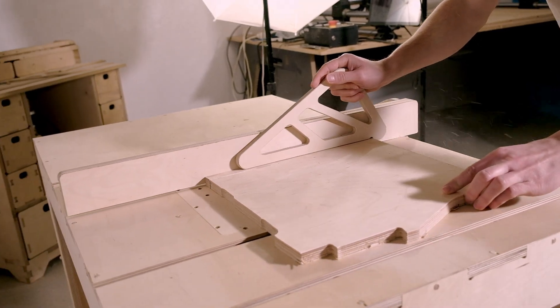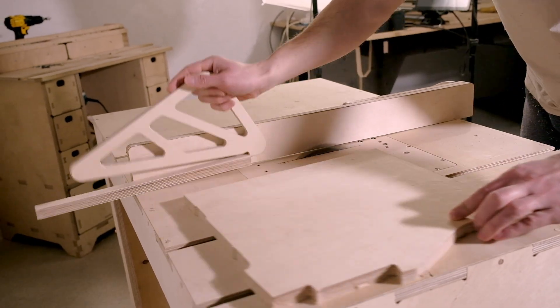As the first cut on the table saw I made a couple of strips of plywood. These will be used as the T profiles for the miter gauge and the crosscut sleds.